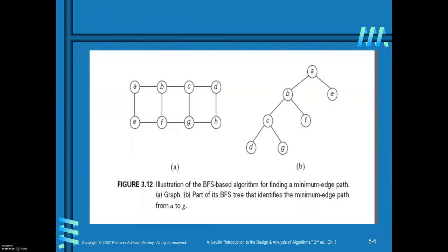One more property you can derive from the BFS algorithm is the minimum path. You can find the minimum path by applying the BFS algorithm. For example, to reach vertex G starting from A, invoke the BFS algorithm for A. You get the resultant tree. From A to G, how many edges are there? 1, 2, 3 — so 3 edges are there. So the minimum path is 1, 2, 3.